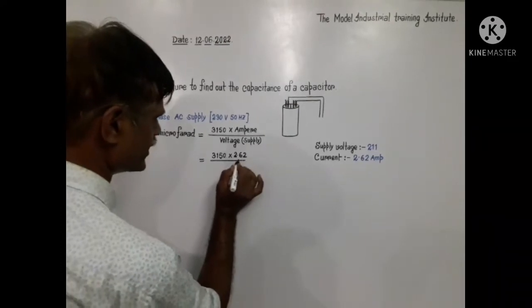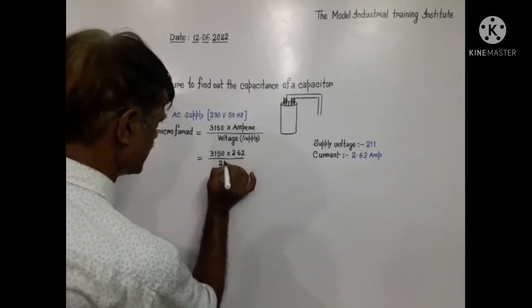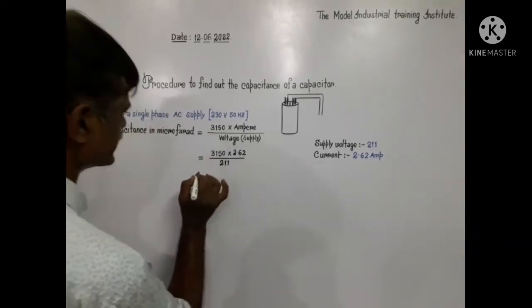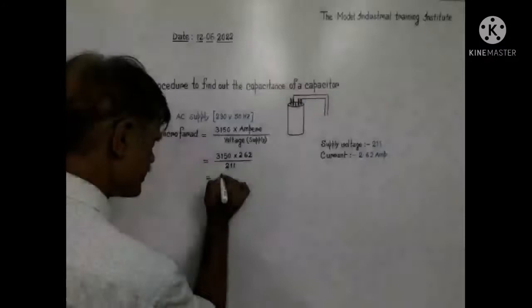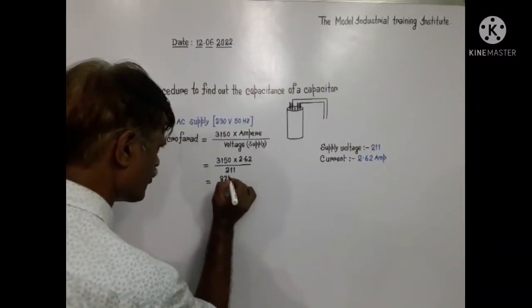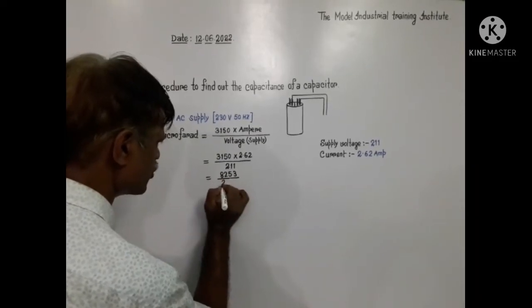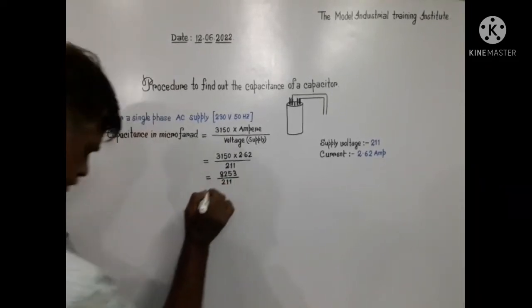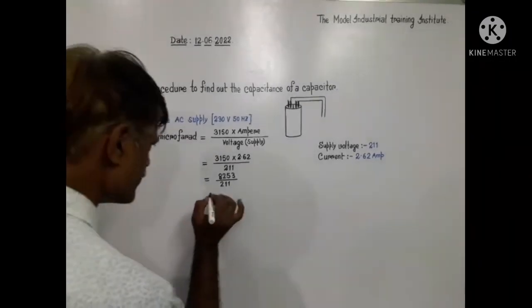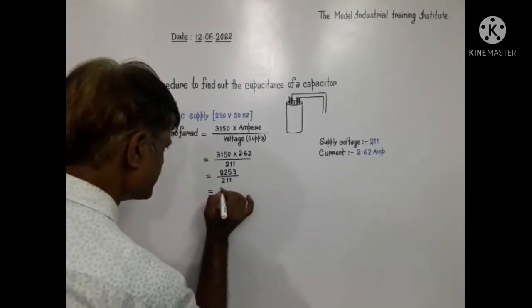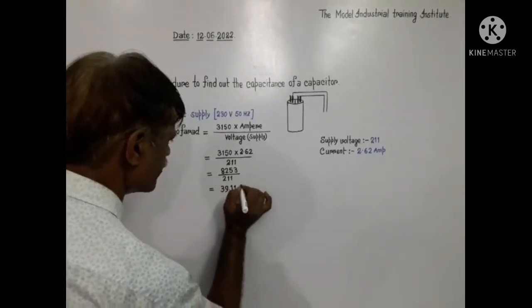Divided by supply voltage 211. Is equal to 8253 divided by 211. Finally the answer will be 39.11 microfarad.